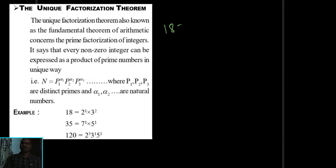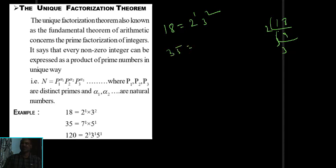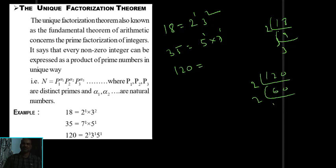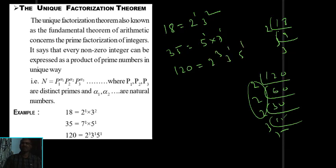For example, 18 can be written as 2^1 × 3^2. For example, 35 is 5 × 7. For 120: dividing gives 2 × 60, 2 × 30, 2 × 15, 3 × 5, so 120 = 2^3 × 3^1 × 5^1. This is the prime factorization of 120.